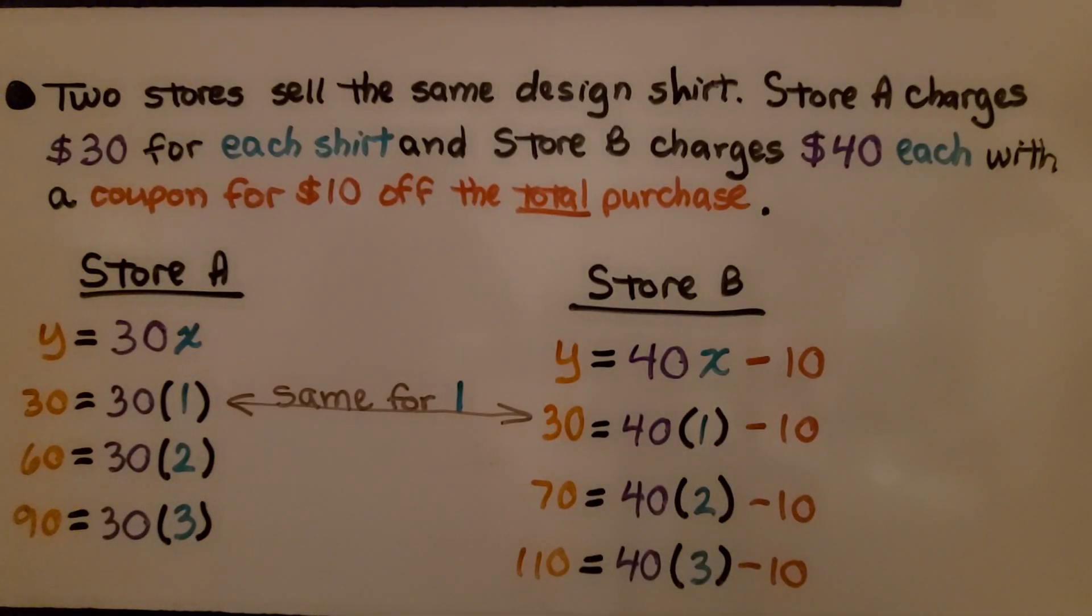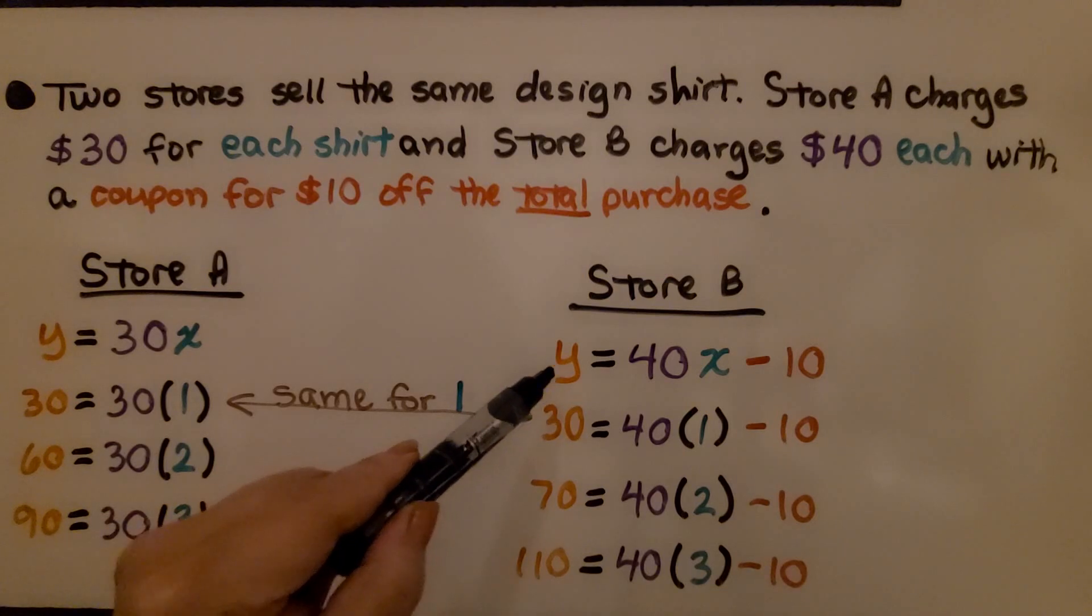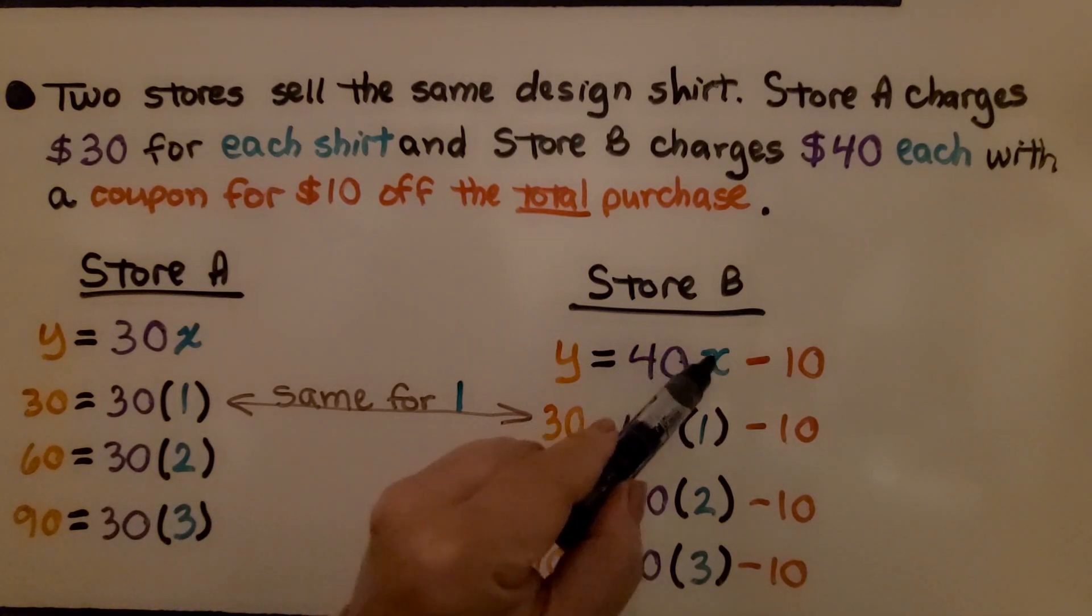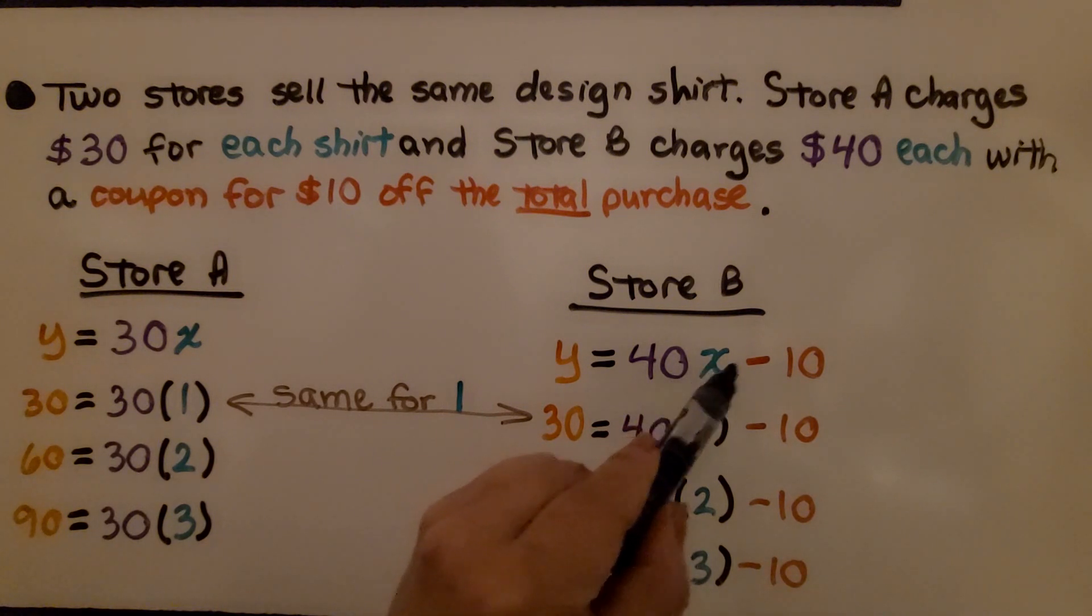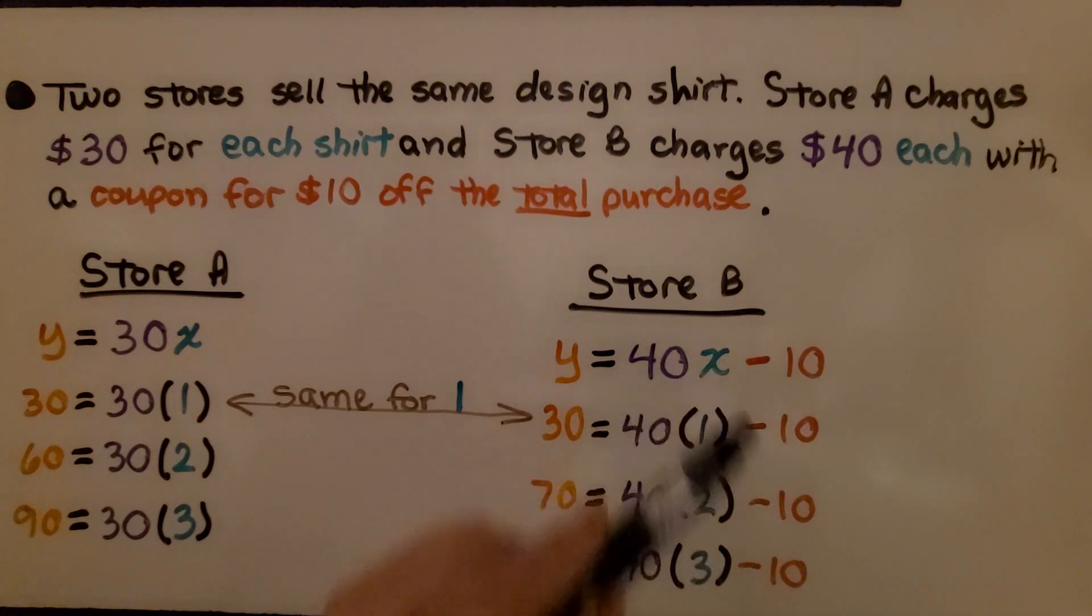Two stores sell the same design shirt. Store A charges $30 for each shirt, and store B charges $40 each with a coupon for $10 off the total purchase. Store A, our equation is y = 30x because it's $30 for each shirt. So, depending on the number of shirts we buy is going to be the total cost. For store B, we have y = 40x - 10 because it's $40 for each shirt, but we take $10 off the total purchase.